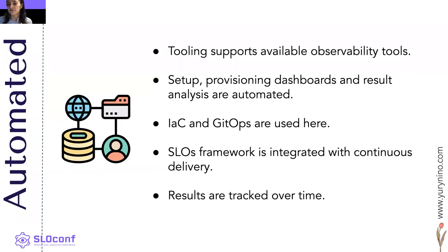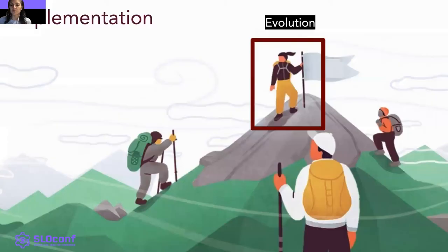Now we can talk about automation. At this level, organizations are building tooling to support available observability tools. With these tools, you can look at existing performance graphics and observe the behavior of SLAs and SLOs. Other signals include: setup, provisioning, dashboards, and result analysis are automated; the SLO framework is integrated with continuous delivery; and SLO results are compared between releases and control groups. Finally, events like service layer impacts and combination failures are applied to experimental groups.